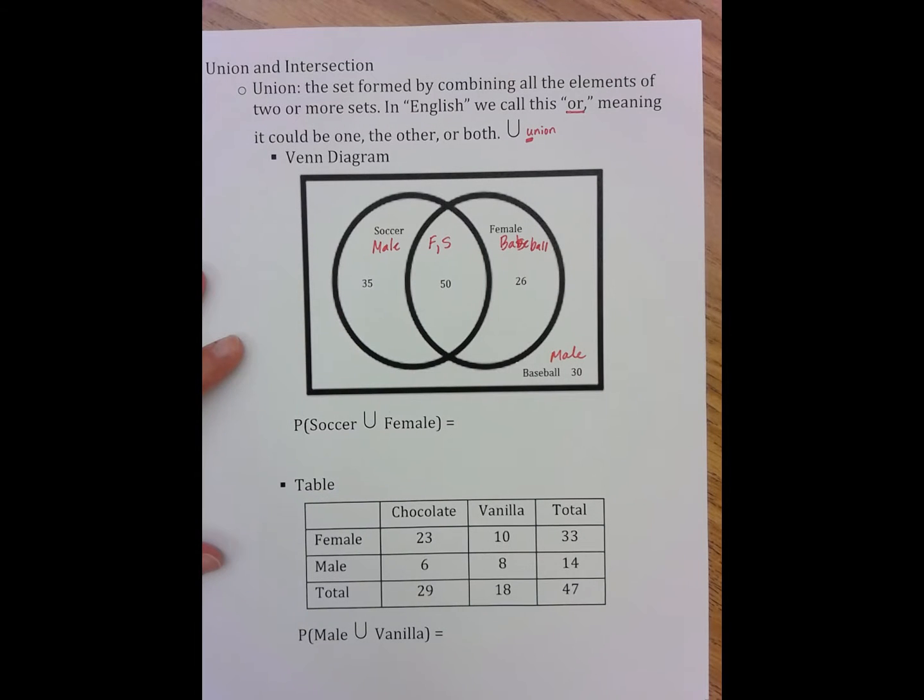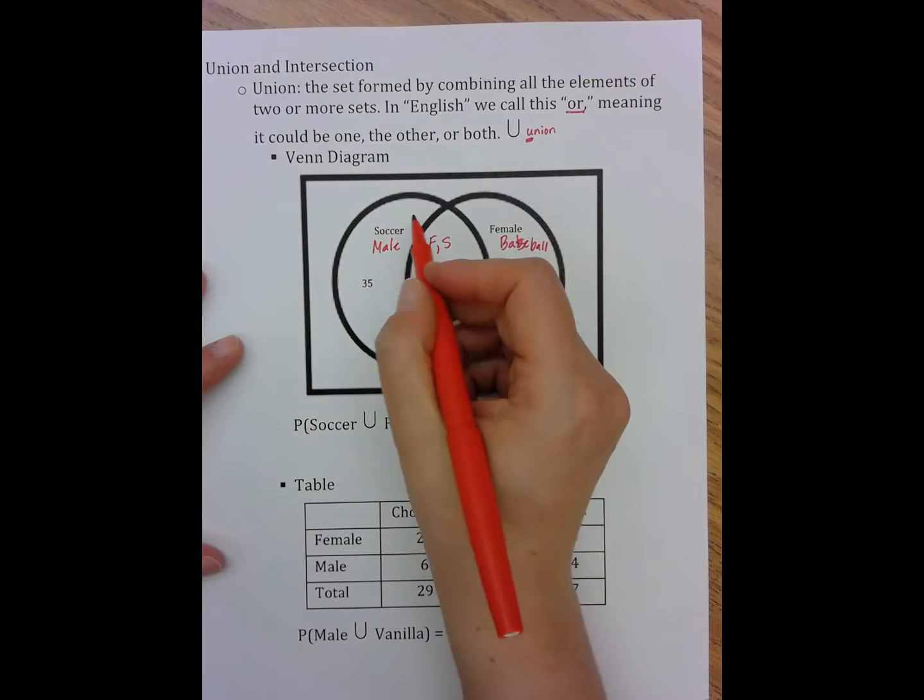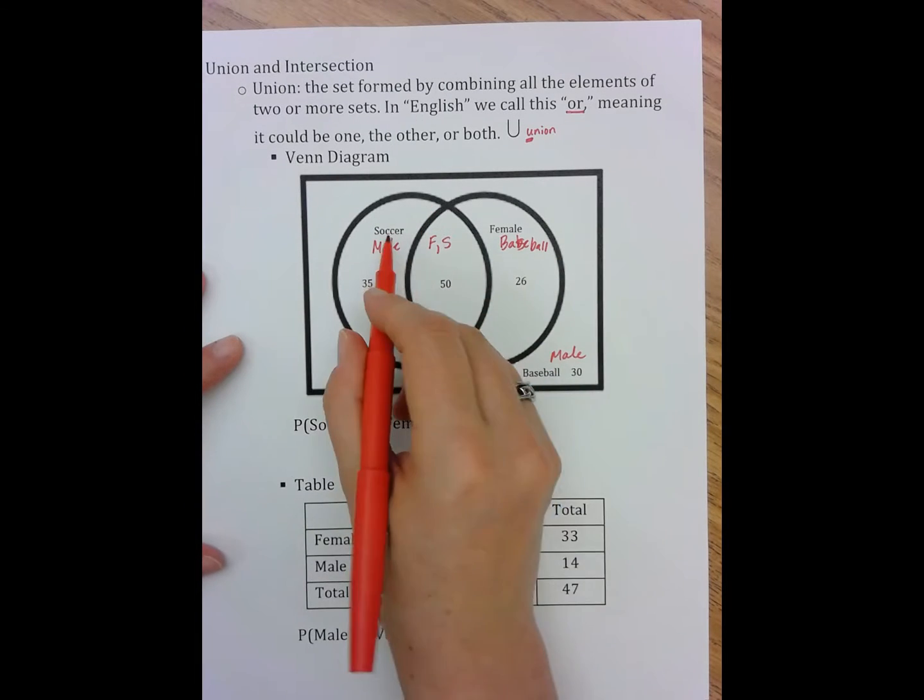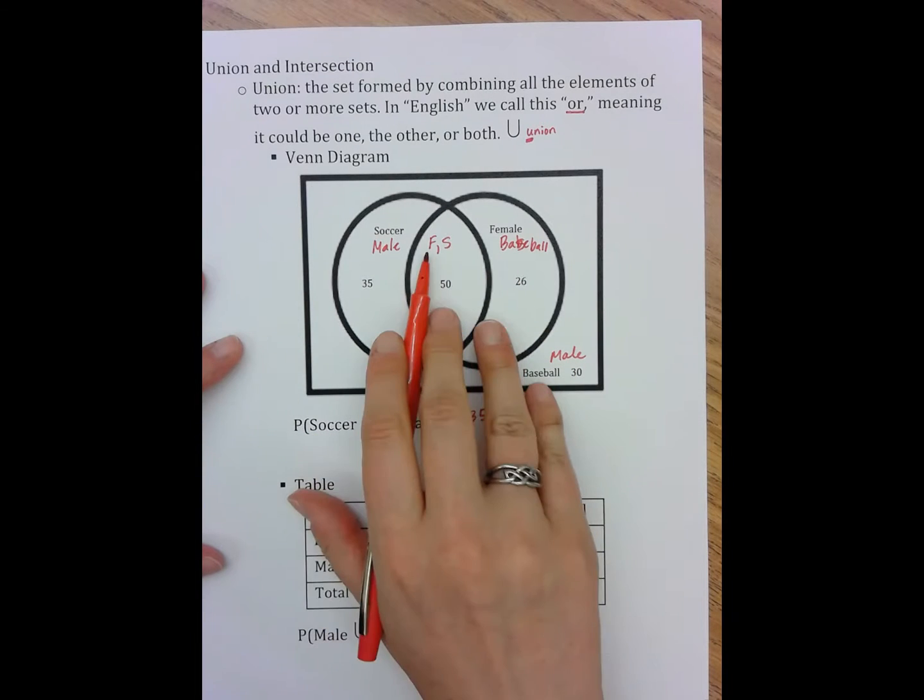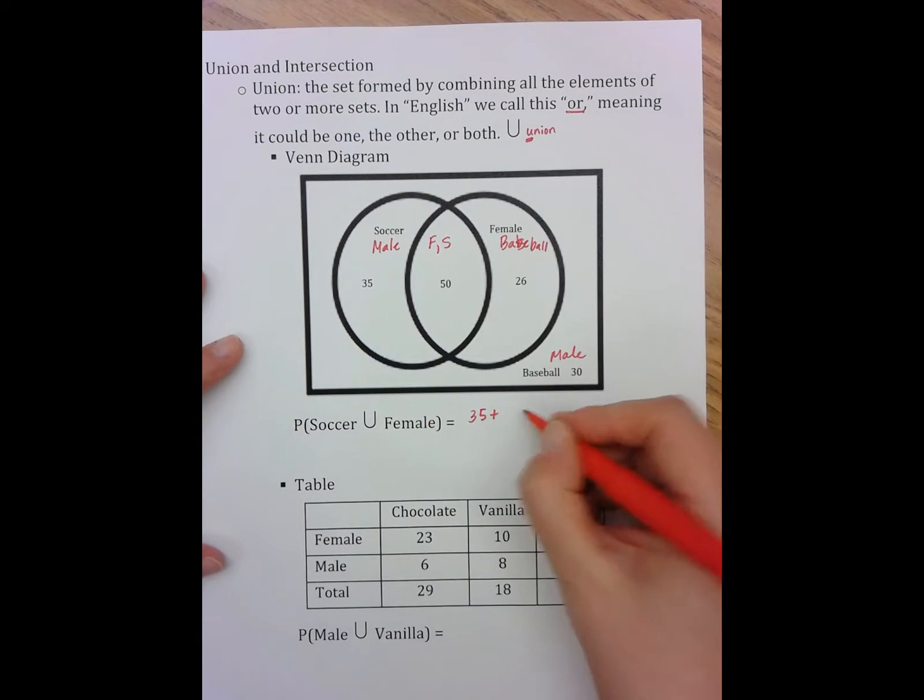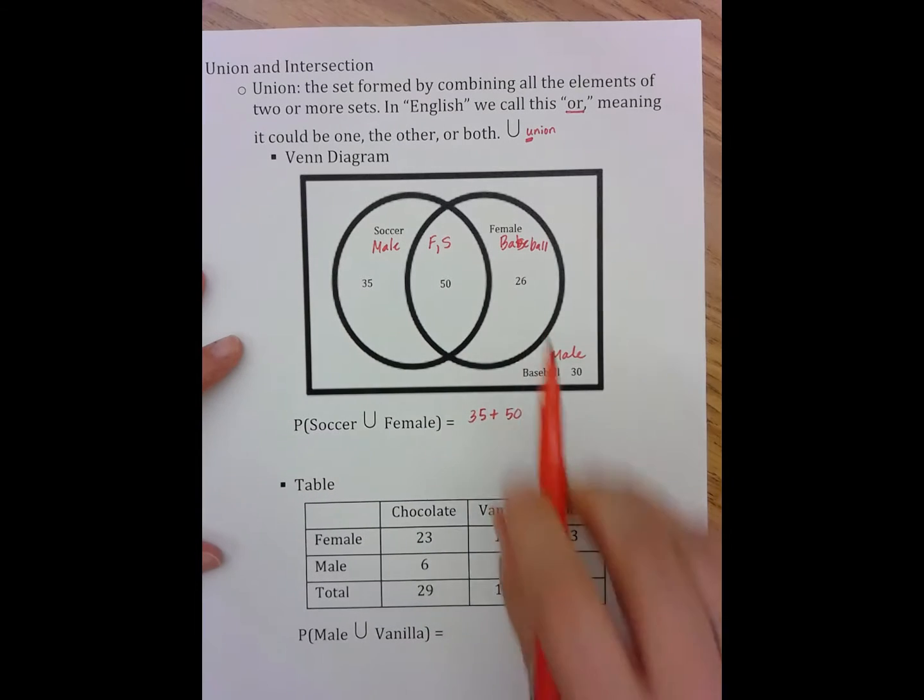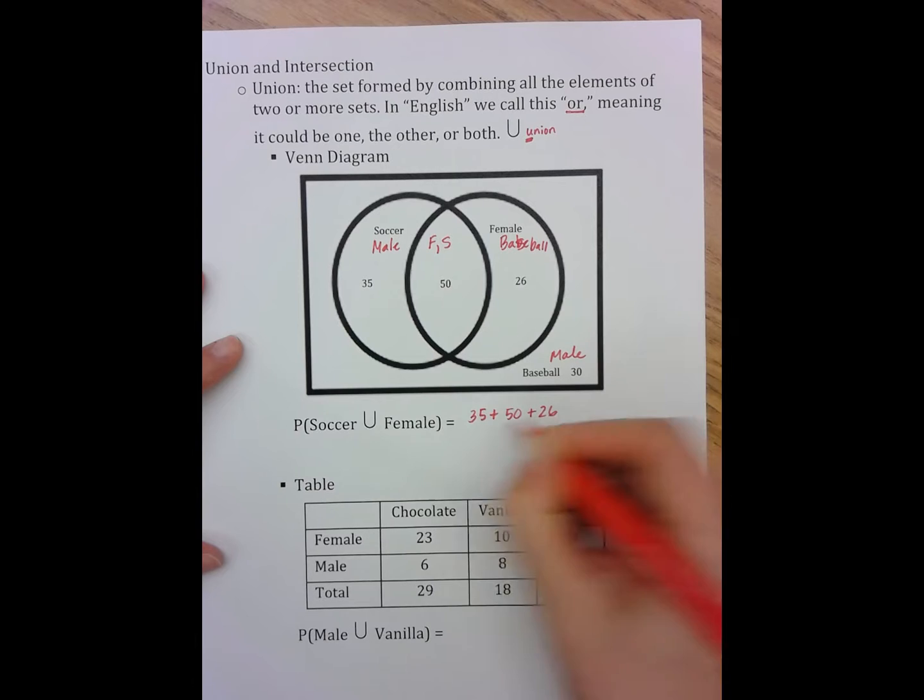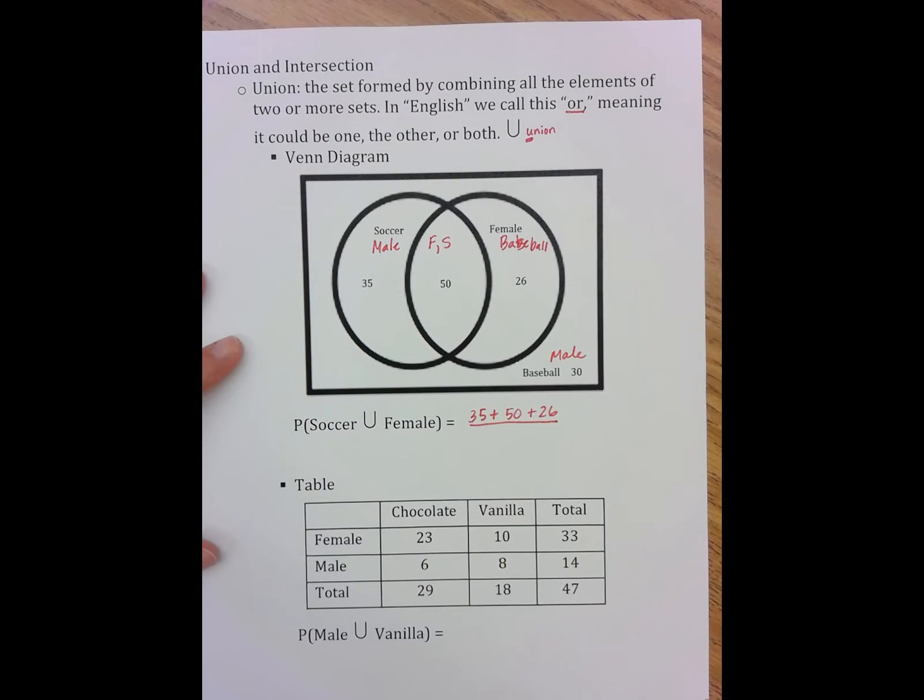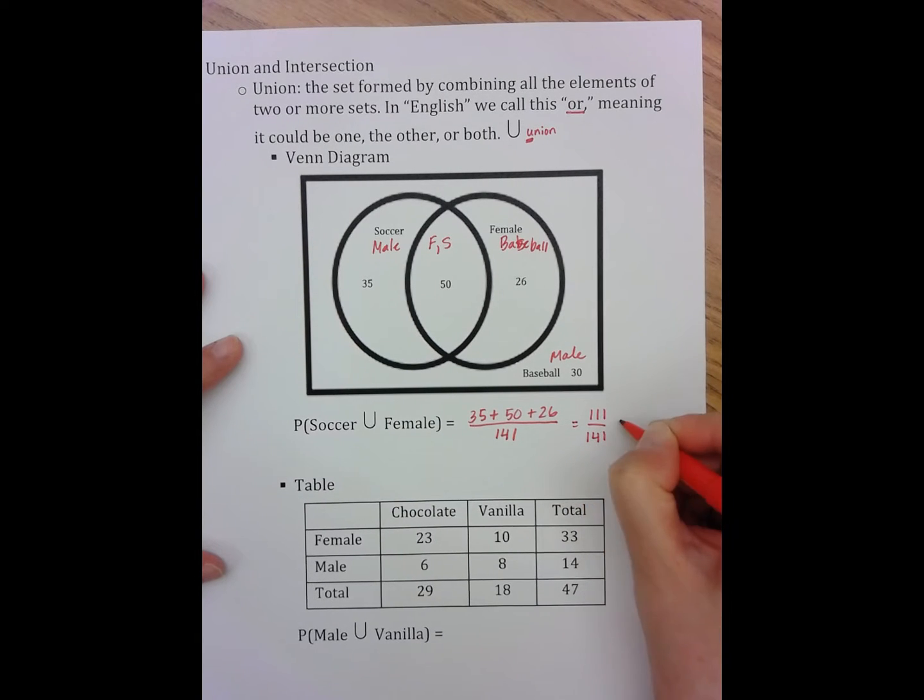So now I'm looking for any of the numbers that say soccer or female. So this number 35 says soccer. This number in here 50 says female and soccer, so it counts in both. And this category over here says female. And I put that over my total and my total here is 141, which gives me 111 over 141,